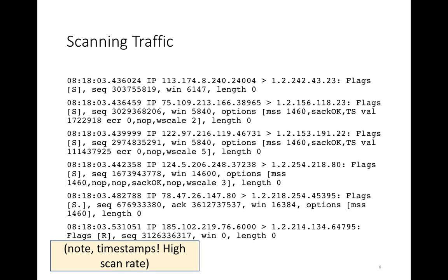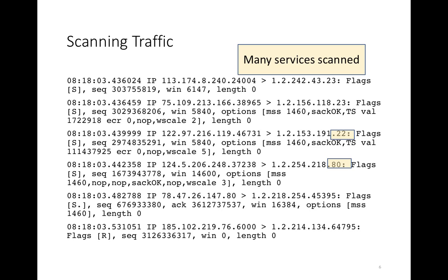Note also the timestamps on the left. The first two packets both arrive within the same millisecond, likely coming from the same type of coordinated scan. We also note that there are many different services being scanned — port 23 in the prior two packets were bots looking for open telnet clients, then we see a bot scanning for port 22 SSH, and then immediately after something scanning for open port 80 on a different host. These are all different hosts on that darknet.